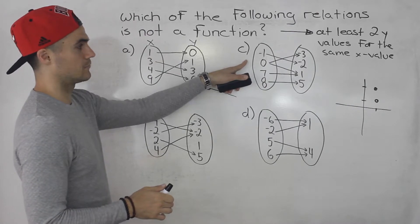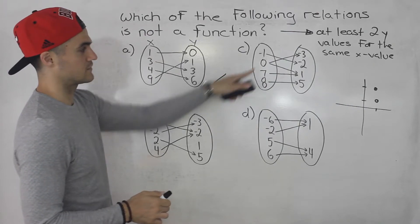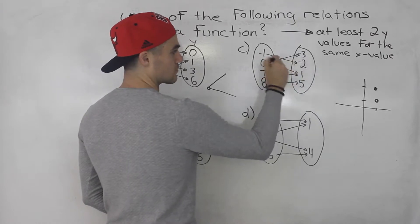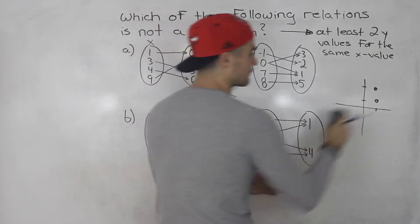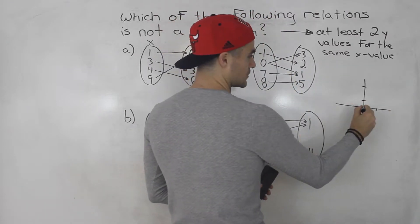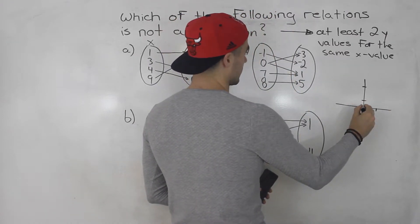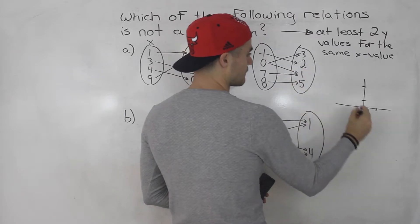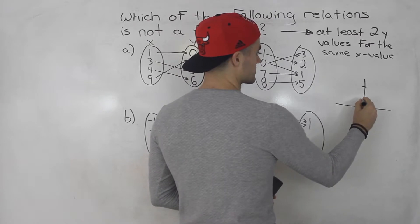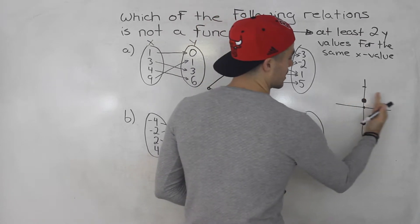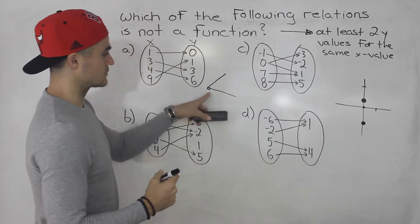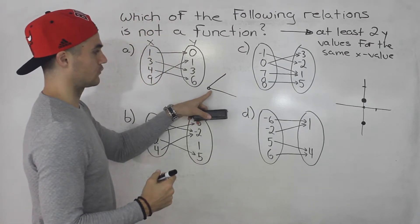Notice you see it in part C. For this x value of zero there are basically two y values: negative three and positive one. If you were to graph this, for an x value of zero there would be a y value of negative three and then a y value of positive one. So it's not going to pass that vertical line test.